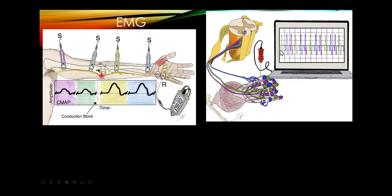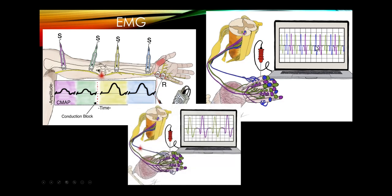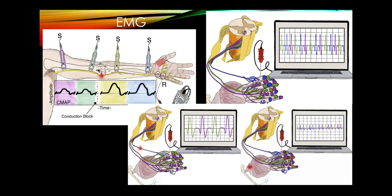When the patient activates the muscle, we see motor units. In a neurogenic condition, due to de-innervation and re-innervation, there are fewer but larger motor units because more muscle fibers belong to each unit. In a muscle disease, random dropout of muscle fibers means each motor unit has fewer fibers, so motor units are much smaller.